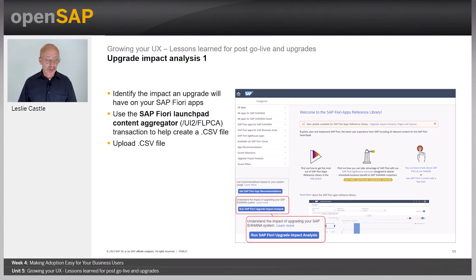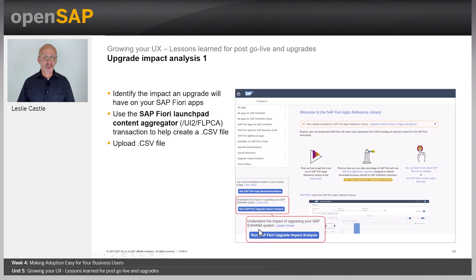Welcome back from the demo. The next tool we're going to look at is the Upgrade Impact Analysis. This tool allows you to identify the impact of an upgrade on your SAP Fiori apps. You can use the SAP Fiori Launchpad Content Aggregator to help create a .csv file, then upload this .csv file into the tool using the 'Run SAP Fiori Upgrade Impact Analysis' button. This tool is very useful for understanding what apps may or may not be available in your target release when planning an upgrade.